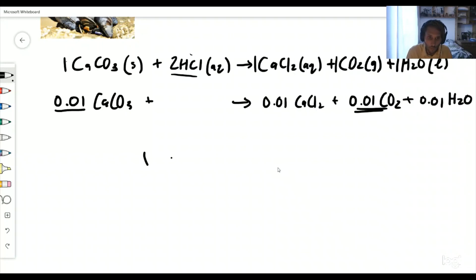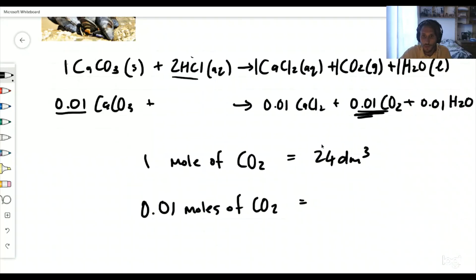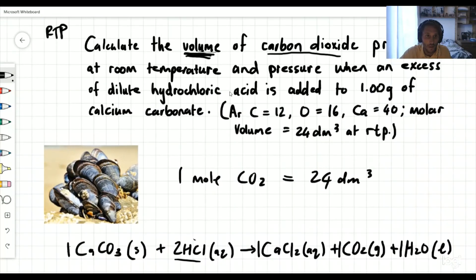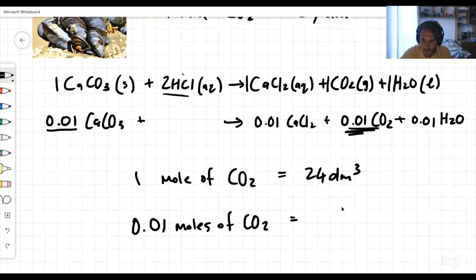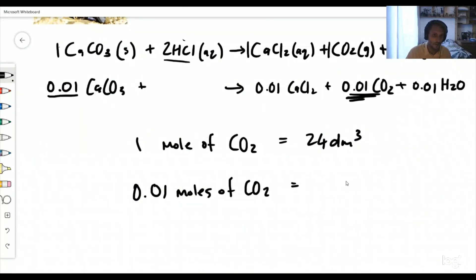Now that's given us the answer. We know that one mole of CO2 is 24 decimeters cubed. So how much would 0.01 moles of CO2 be? What would the volume be? Calculate the volume in decimeters cubed, or liters. How do we go from 1 to 0.01? Simply times by 0.01, do the same to the other side, type it into your calculator, and what you'll get is 0.24 decimeters cubed of CO2.